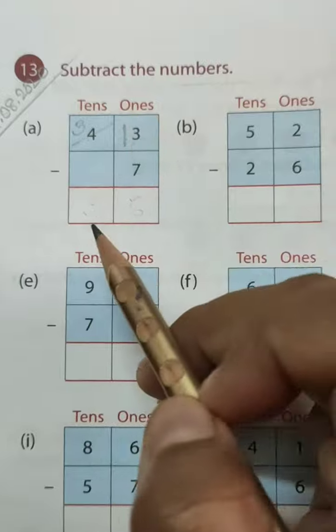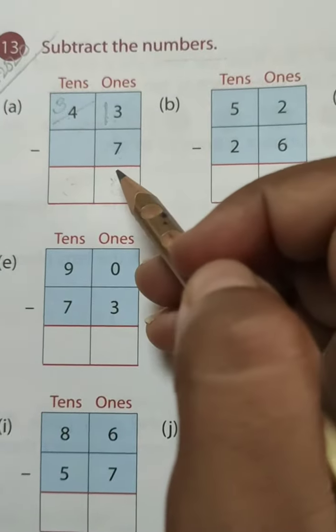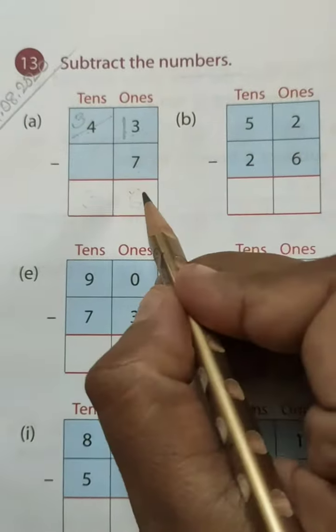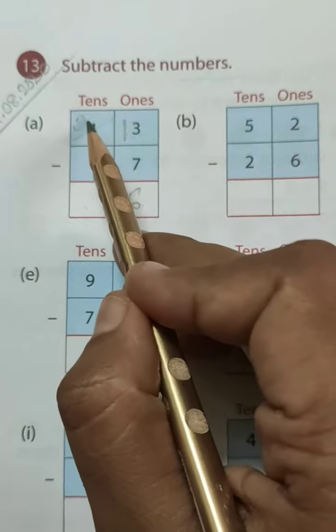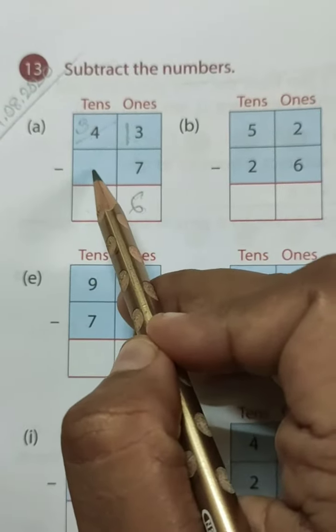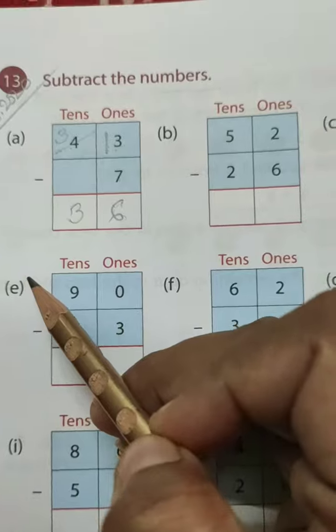So after 7 you have to count up to 13. 7 ke baad 13 tak count karo it will be 6. And then here 3 and here idhar pe koi number nahi hai toh 3 hi ho jaega. Understood?